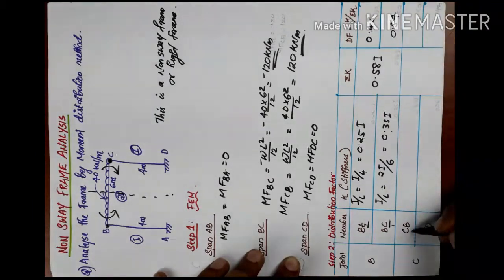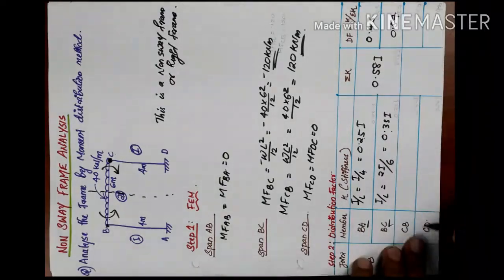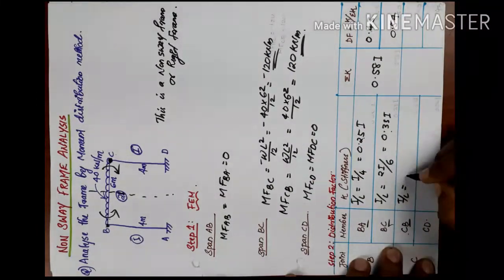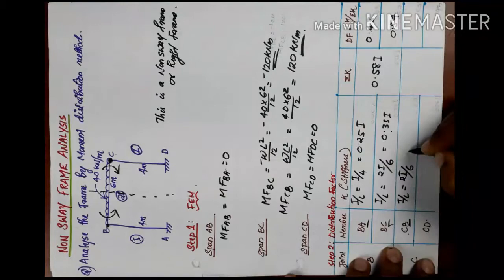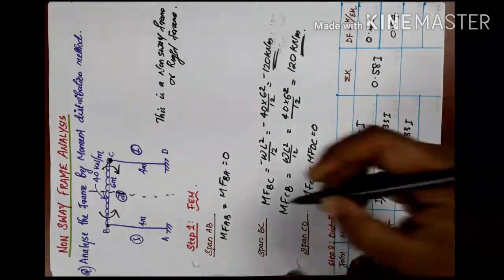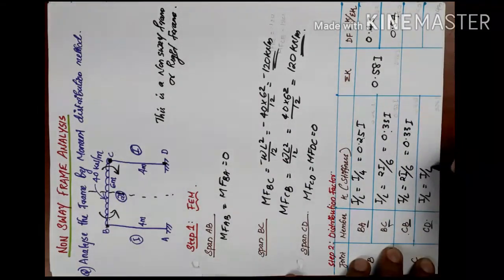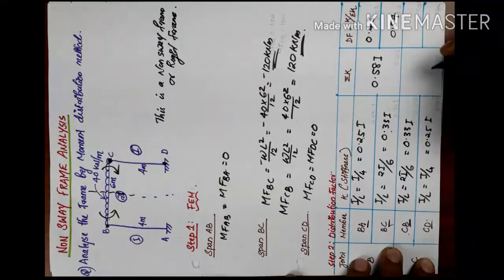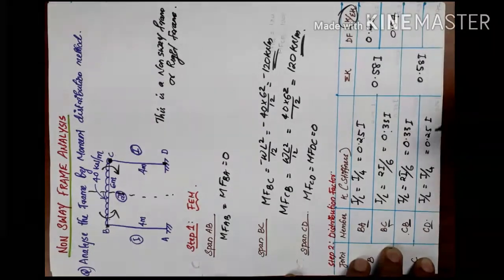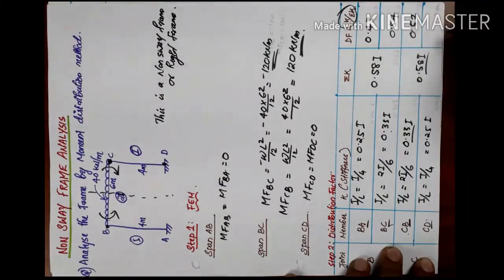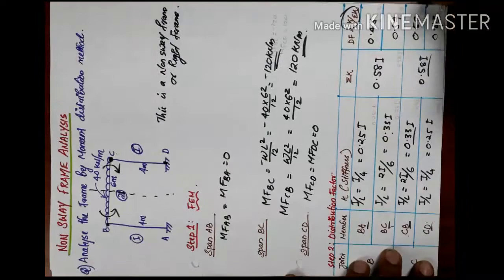For C joint, CB and CD are continuous. Then we have equations of I by L. We get 0.33i. When you come to C, then it will fix for D, again i by L that is i divided by 4, we have 0.25i, we have 0.58i. Distribution factor is k divided by sigma k, that is 0.33i divided by 0.58i, we have 0.57 and 0.43.